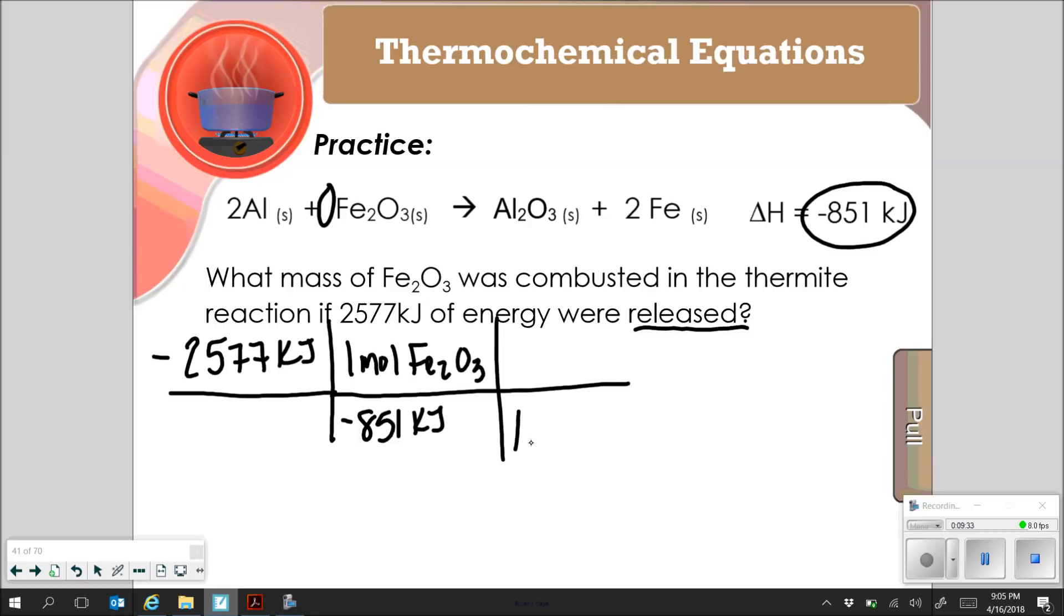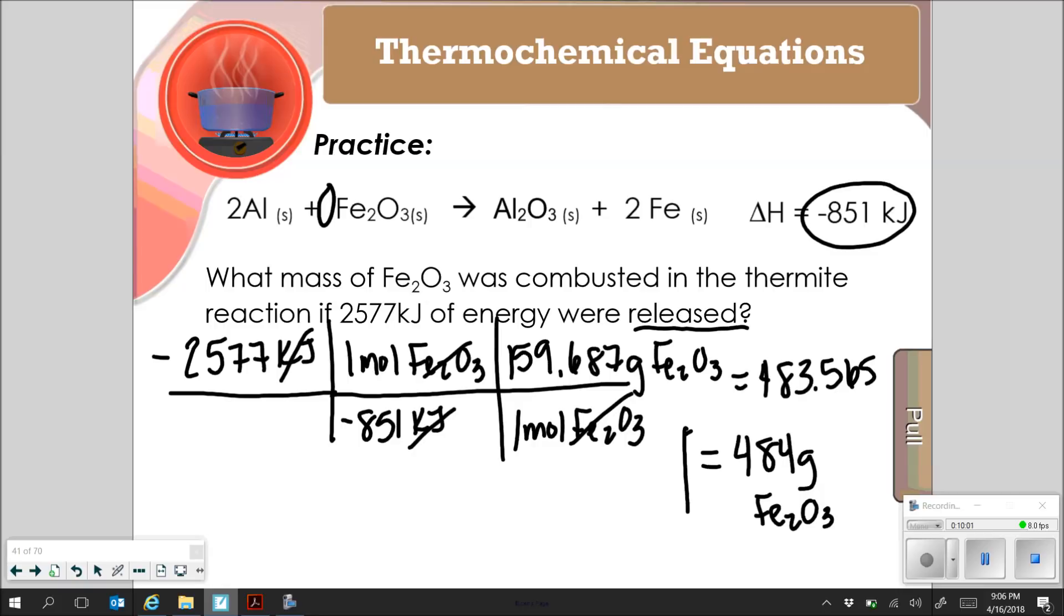And then for every one mole, I have 159.687 grams. I'm going to solve it out. And I got 483.565. When I round that to significant digits, I get 484 grams. And the important thing to note there is that my signs were consistent. If 2577 is released, that's a negative. And then I put a negative down here.